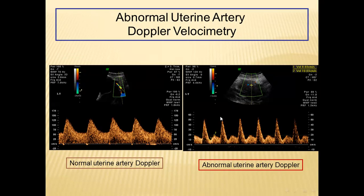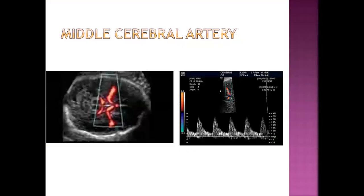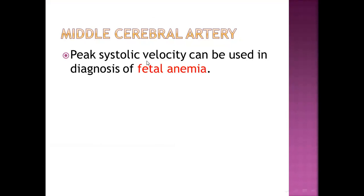The middle cerebral artery is the last item. This is the circle of Willis, and this is the area of interest to catch the middle cerebral artery Doppler. What is important for us is the peak systolic velocity, which can be used to diagnose fetal anemia. We use it in cases at risk of hydrops fetalis to allow early diagnosis of fetal anemia before the occurrence of hydrops fetalis.